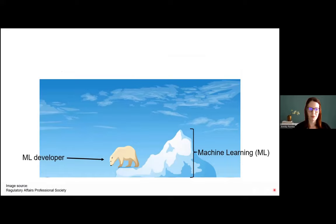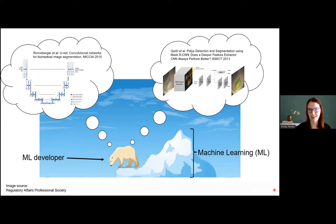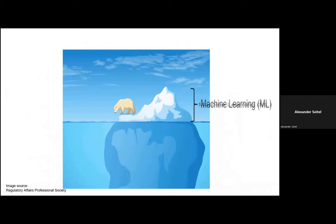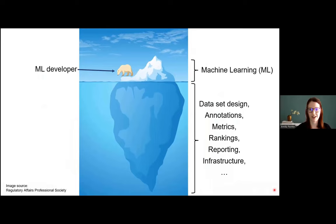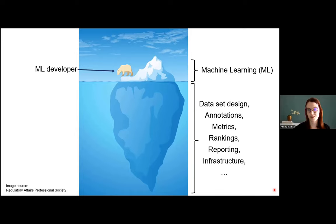When we talk about machine learning, we often see ourselves exploring the world of machine learning, and many researchers care most about finding a cool new architecture. However, machine learning is much more than just finding a good model — it's also about dataset design, high-quality annotations, which metrics we use, how we rank algorithms, and how to report results. All of those topics are underrated, and we should take care of them.